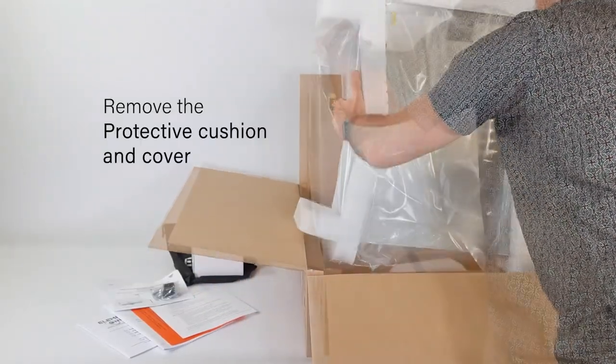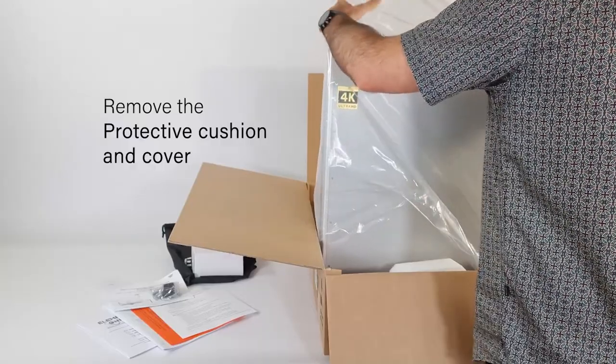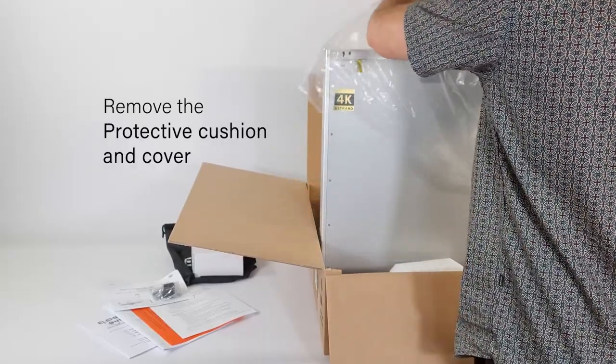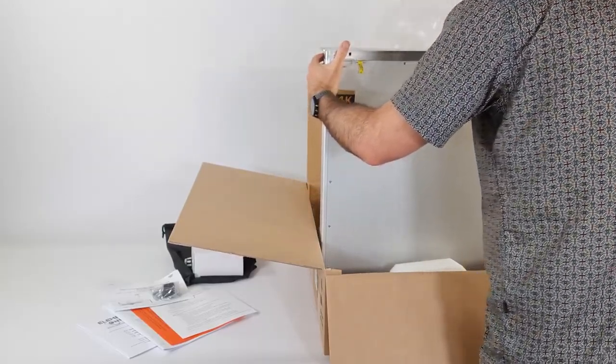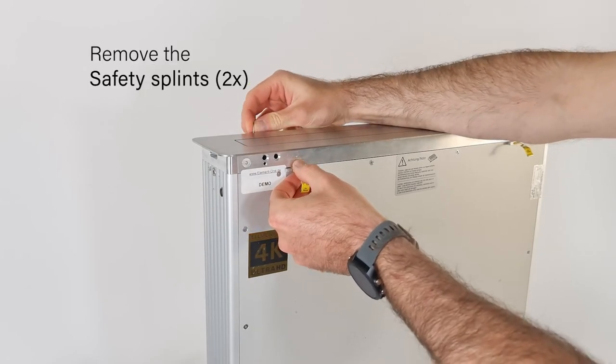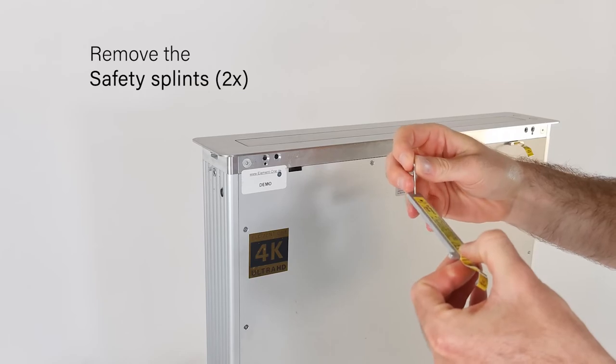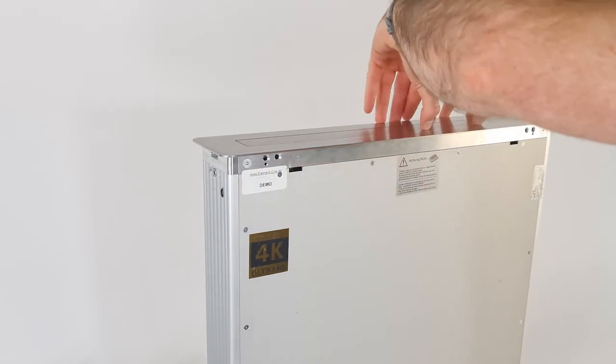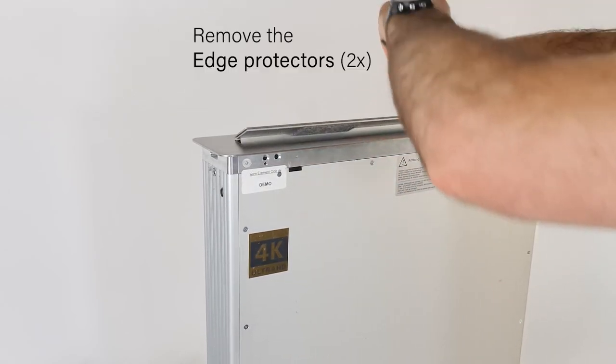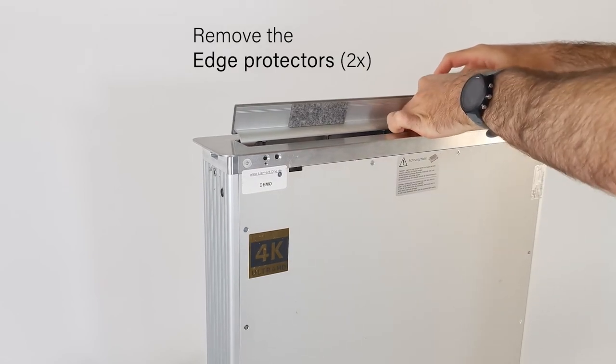Now you can start to remove the protective cushion and the cover. The monitor is secured for transport with two safety splints on the upper side of the device. Please remove these. Open the cover flap carefully and then remove the two edge protection caps.